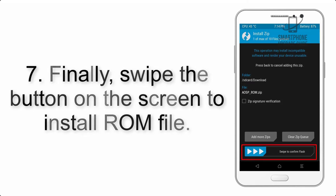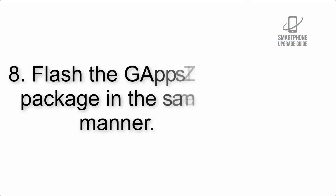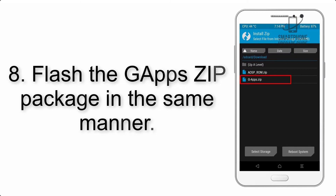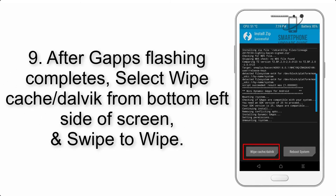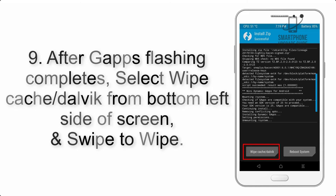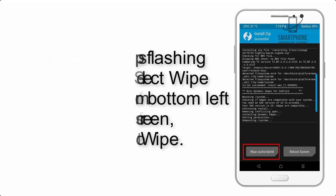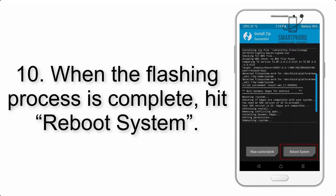Step 7: Swipe the button on the screen to install the ROM file. Step 8: Flash the GApps zip package in the same manner. Step 9: After GApps flashing completes, select Wipe Cache and Dalvik from the bottom left side of the screen and swipe to wipe.